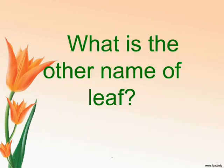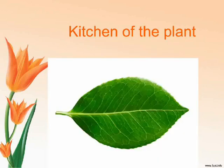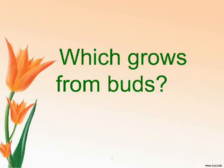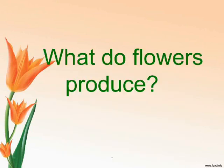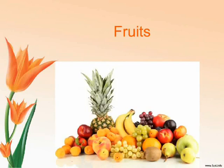What is the other name of leaf? Kitchen of the plant. Which grows from buds? Flowers. What do flowers produce? Fruits.